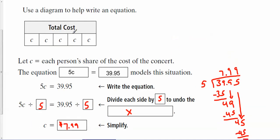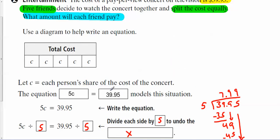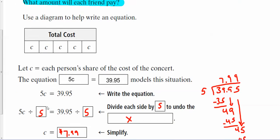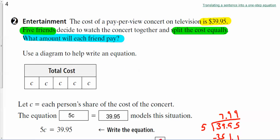So each friend, they owe $7.99. And so all I did, took the total cost, which is right here, 5c. So 5c equals $39.95. And I just solved the equation by dividing both sides by 5.